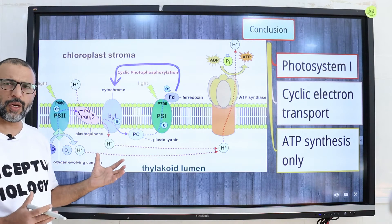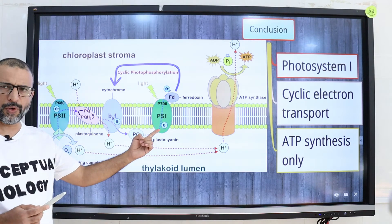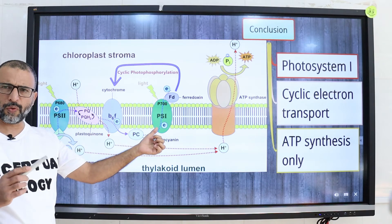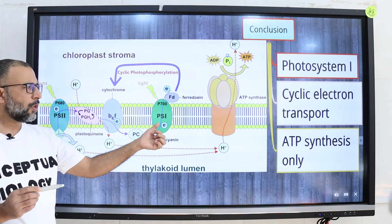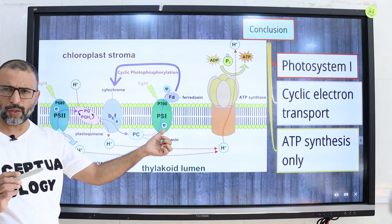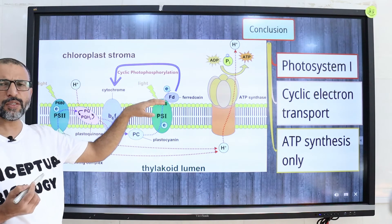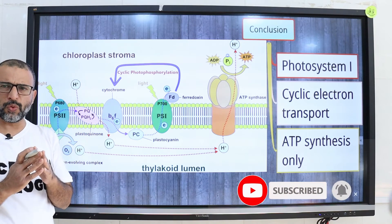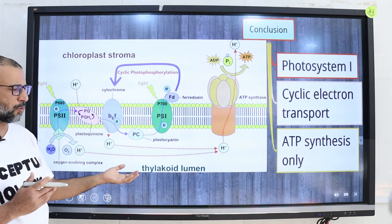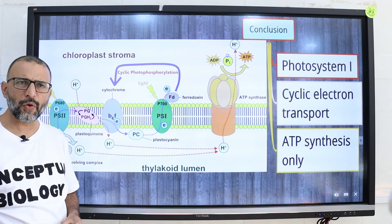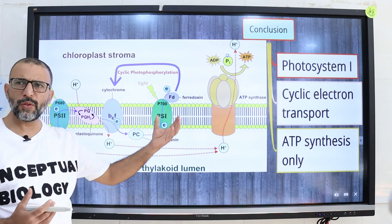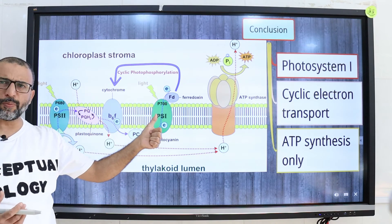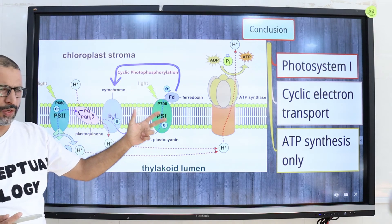To sum up: in cyclic photophosphorylation, only photosystem 1 is involved. Electrons originate from the P700 chlorophyll A molecule at the reaction center and eventually return back to P700. It takes place in the thylakoid membrane, and as electrons pass from one electron carrier to another they lose energy, which is used to pump protons from the chloroplast stroma to the thylakoid lumen. The enzyme ATP synthase uses the energy of protons to synthesize ATP. NADPH is not produced, water is not split, and oxygen is not generated.